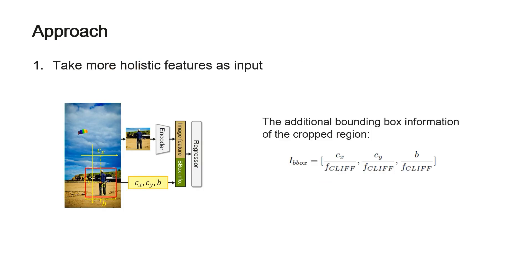First, CLIFF takes more holistic features as input. Besides the encoded image feature, the additional bounding box information of the cropped region is also fed to the regressor. This information includes the center location relative to the full image center and the original size.